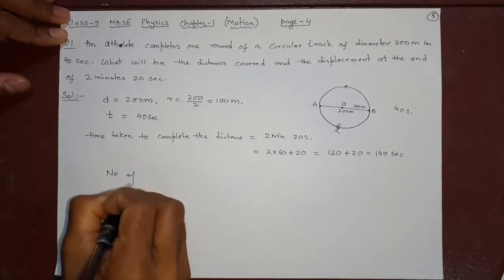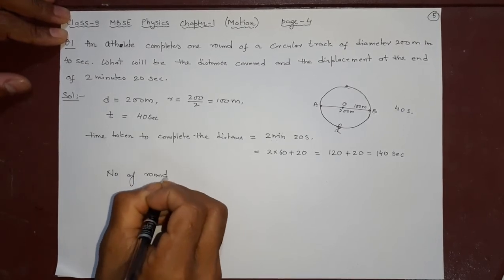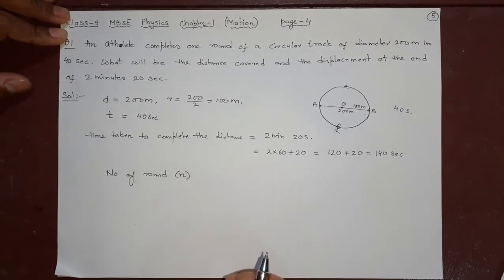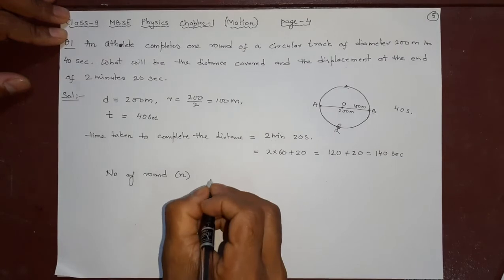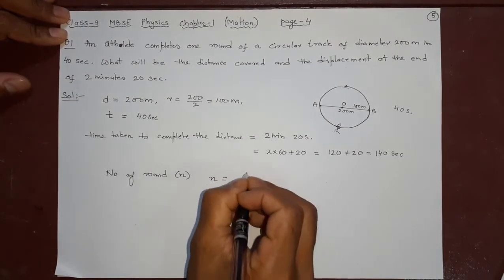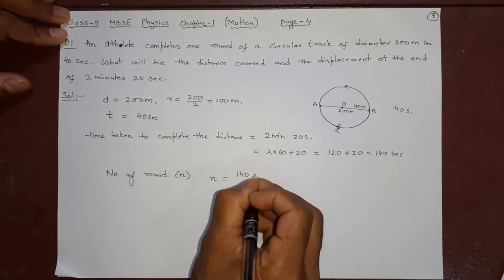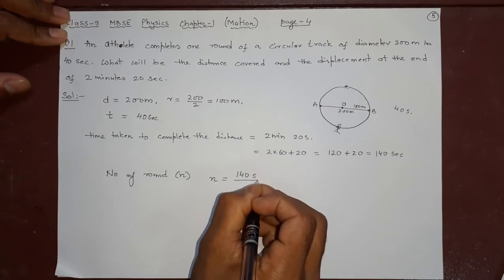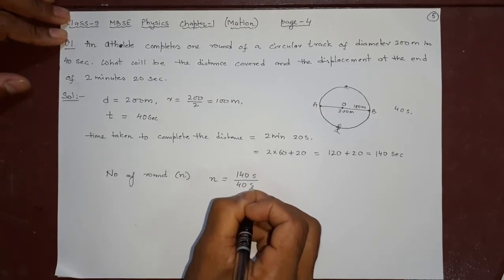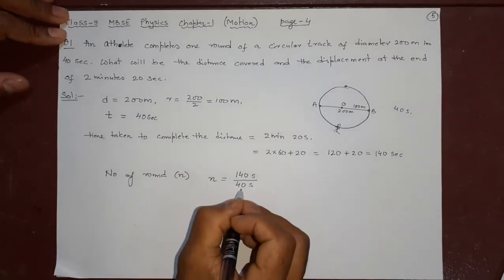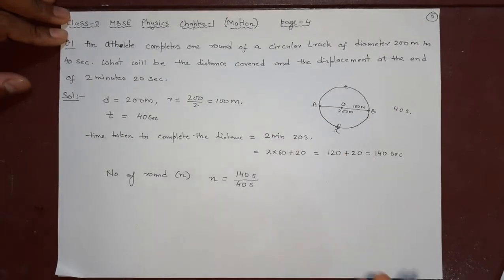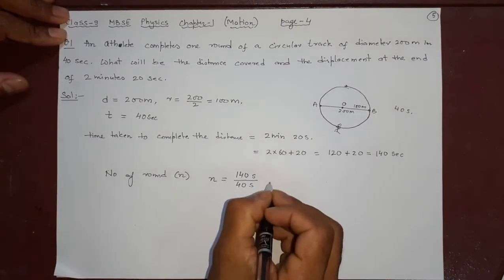Now, number of rounds, how many times will it go? Let us write it as n. n will be 140 seconds divided by 40 seconds. How many times it will make 40, 40, 40 like that?